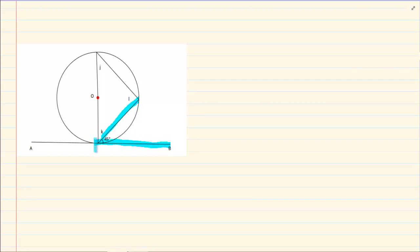Here is our tangent, here is our chord, and if you go from these two points they are meeting at J. So J is equal to 45 degrees — tan-chord theorem.